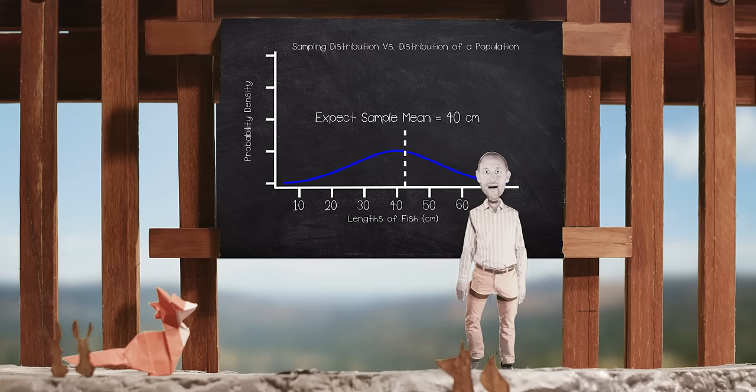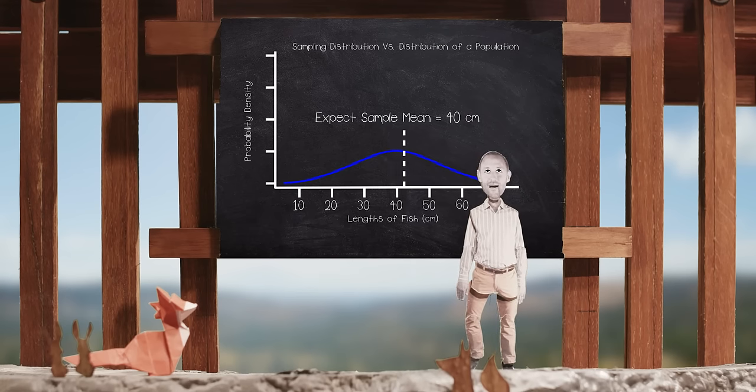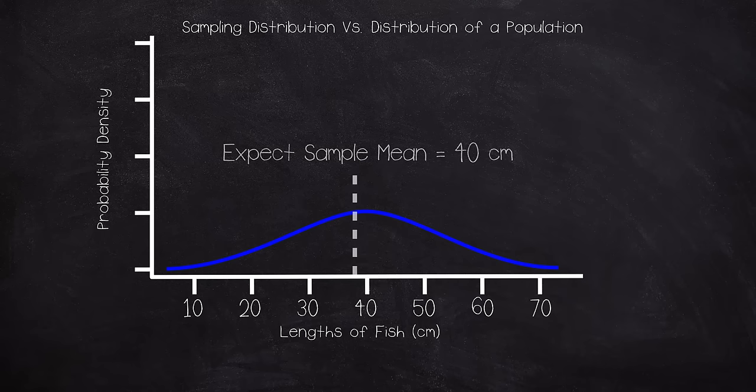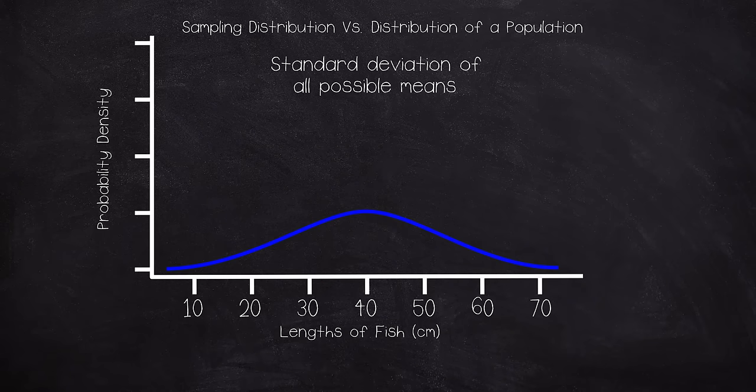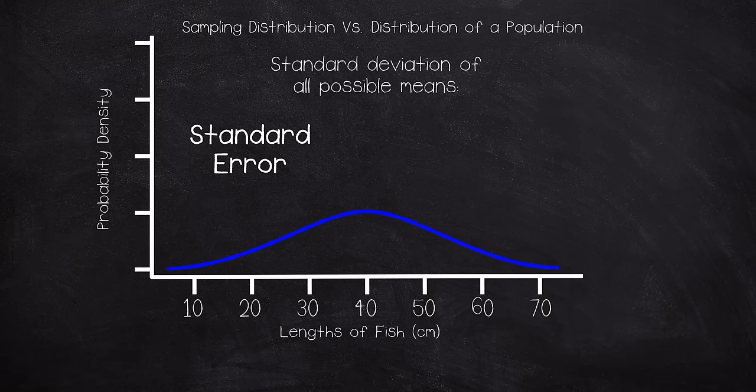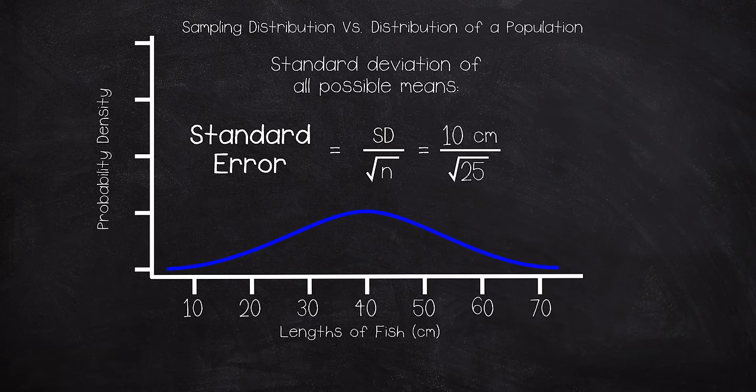Now imagine all the thousands of random samples we could have taken. Each mean deviates slightly, because not all samples have a mean that equals Neptune's true mean of 40. The standard deviation of all possible means is called the standard error, and we can work that out. The standard error is the standard deviation of the lengths of individual fish divided by the square root of the sample size. So our standard error is 2 cm.